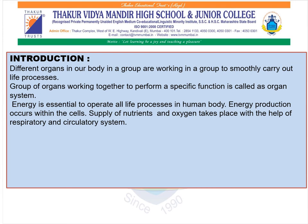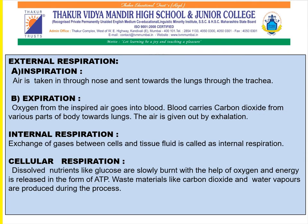The supply of nutrients and oxygen takes place with the help of the respiratory and circulatory systems. External respiration has two categories: inspiration and expiration. In inspiration, air is taken in through the nose and sent towards the lungs through the trachea. In expiration, oxygen from the inspired air goes into the blood, and the blood carries carbon dioxide from various parts of the body towards the lungs, and the air is given out by exhalation.